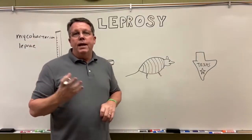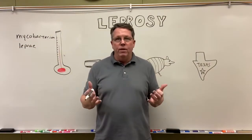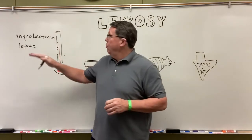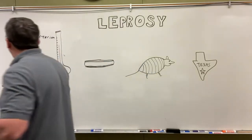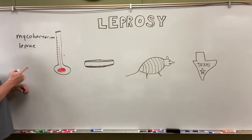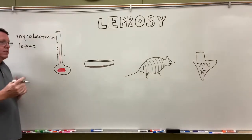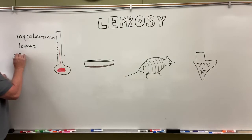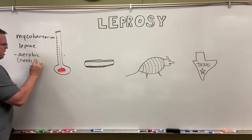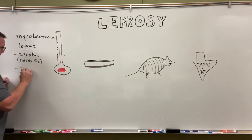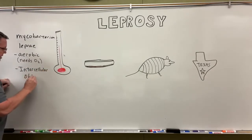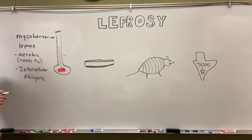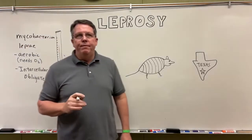Tuberculosis is an infection of the lung, and there's oxygen in the lungs. What we know about Mycobacterium leprae is that it needs oxygen — it's aerobic. It also needs to live inside of another cell, so it's an obligate intracellular organism, meaning it has to live inside other cells.